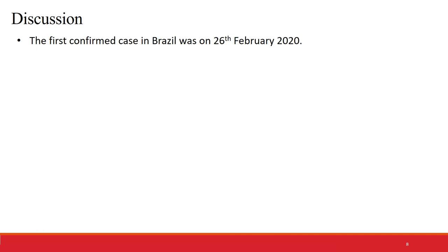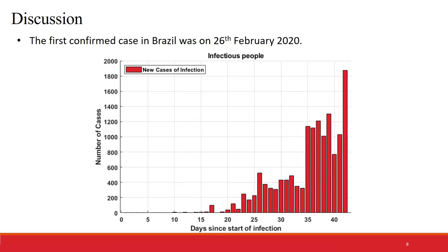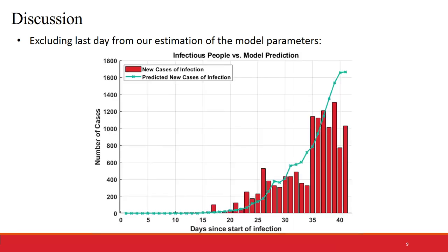Discussion. The first confirmed case in Brazil was on 26th of February. Since then, this is the number of new cases each day. If we exclude the last day from our estimation of the parameters to later test the model, we get the following results. We can see that the prediction of the number of new cases follow the curve of actual new cases quite well.